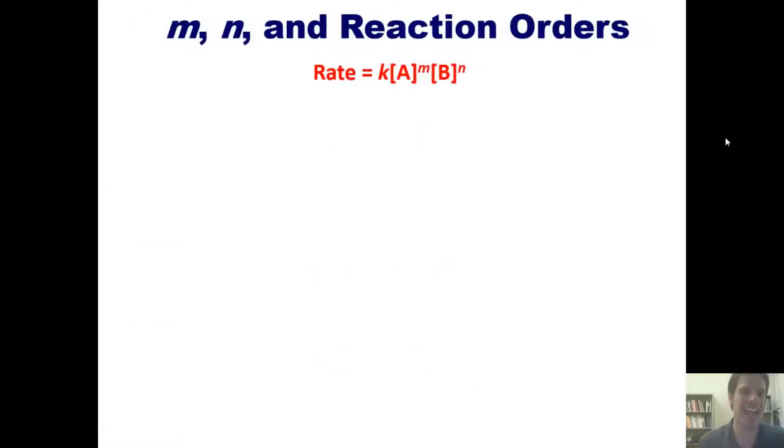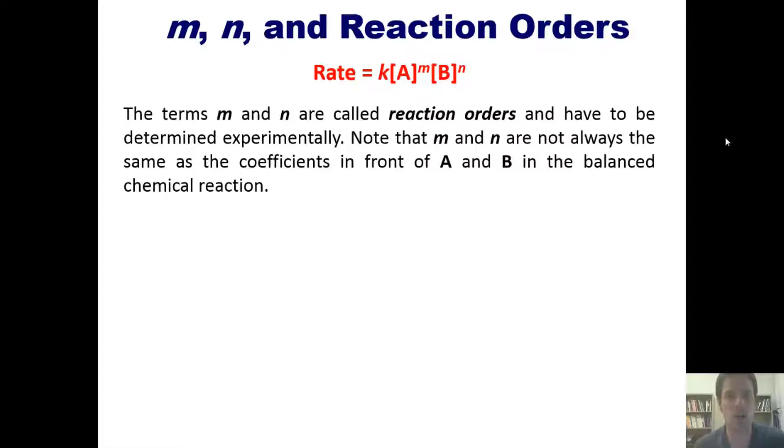So what in the world are M and N? Well, I'll tell you. The terms M and N are called reaction orders. These have to be determined experimentally. Please remember that M and N are not necessarily the same as the coefficients in front of A and B in the balanced chemical equation. Sometimes they can be the same, sometimes they're different. But they don't have anything necessarily to do with each other. M and N can only be determined by experiment. For the previous rate law we discussed here, the reaction of ammonium with nitrogen dioxide, we determined that if I double the concentration of ammonium, it doubles the rate. If I triple the concentration of ammonium, it triples the rate. If I double the concentration of nitrogen dioxide, it doubles the rate. If I triple it, it triples the rate, and so forth and so on.